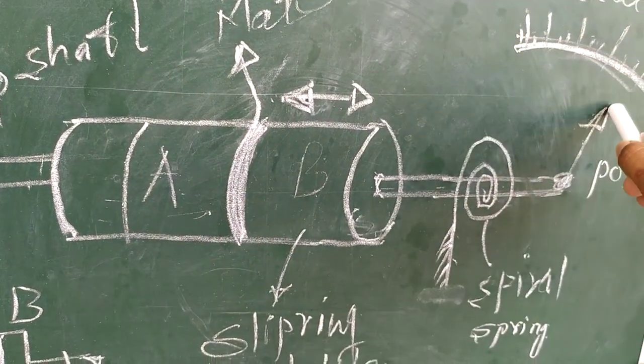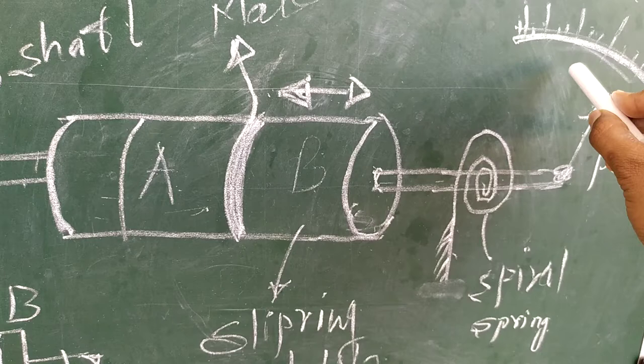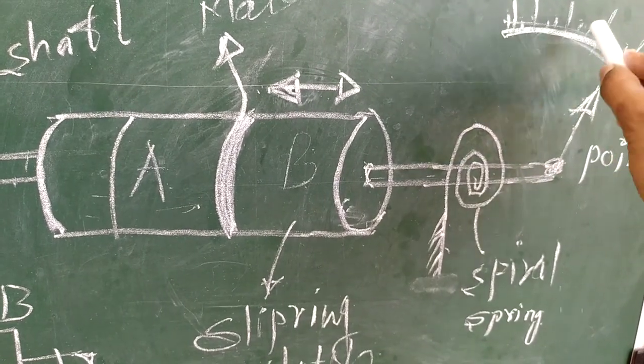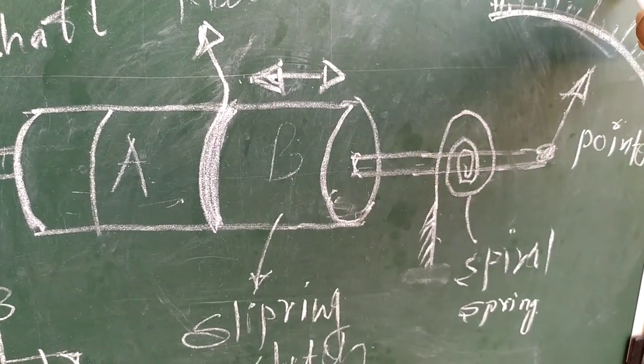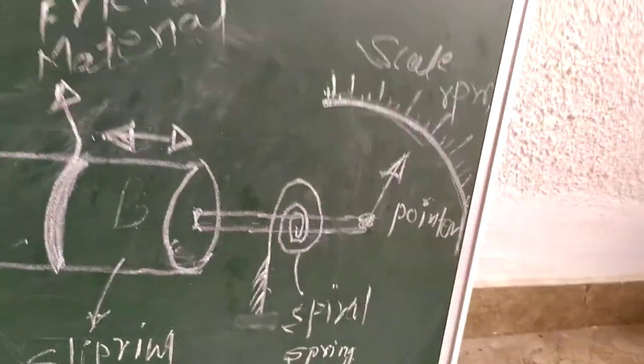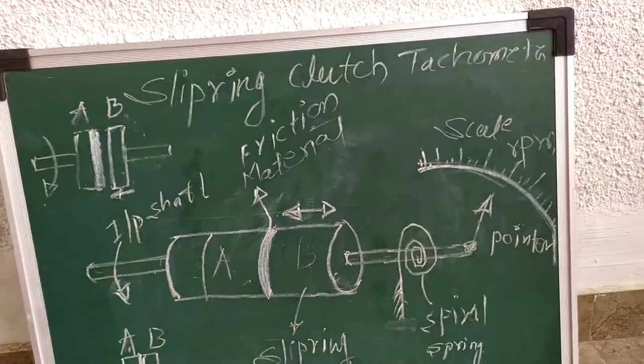Now what we have to observe: through this mechanical linkages, this pointer will move. We have to just take a reading from this calibrated scale. It will be in RPM. So this is the slip ring clutch tachometer.